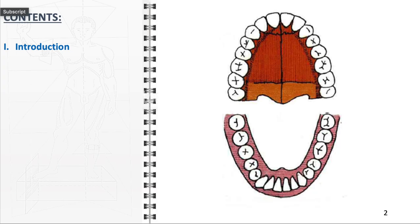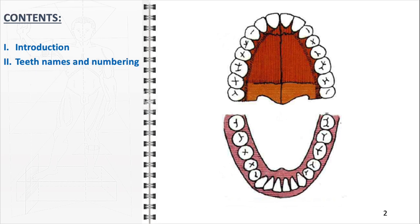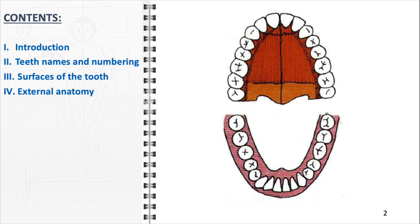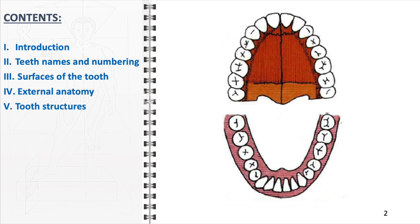Beginning with a comprehensive introduction of dental anatomy, starting by identifying each tooth type and their corresponding numbers, providing a clear guide to their classification. Next, we'll delve into the intricacies of tooth surfaces, exploring both their external anatomy and internal structure in detail.